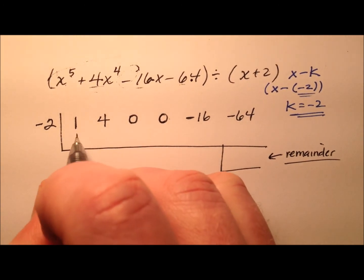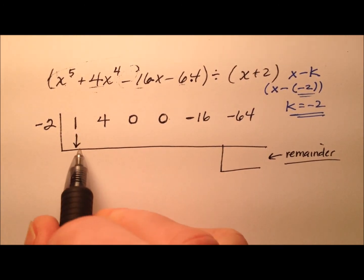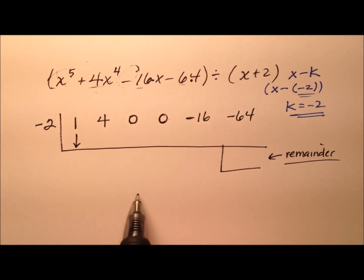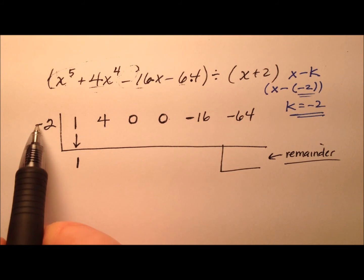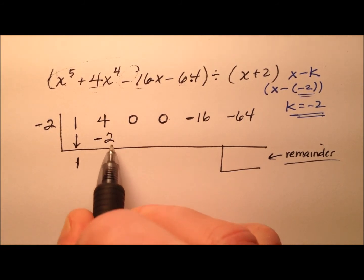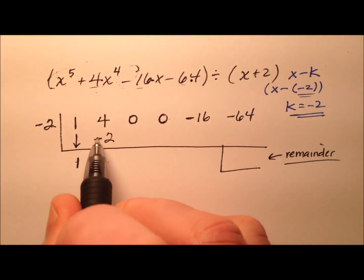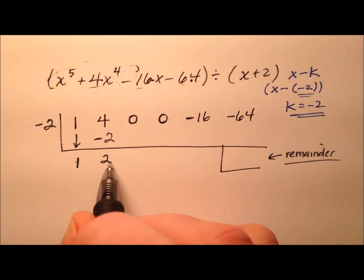Okay, so let's go through our series of multiplications and additions and see what happens. We're going to bring this one down, so multiply negative two times one is negative two, and then add, so four plus negative two, or four minus two.